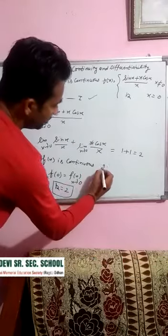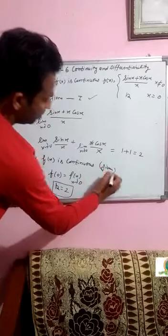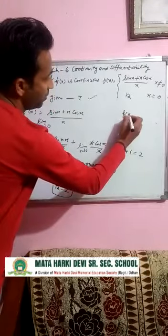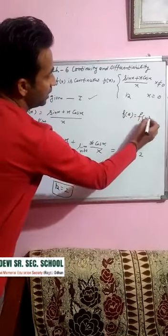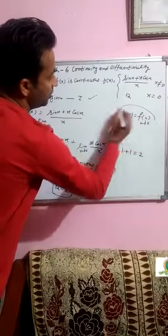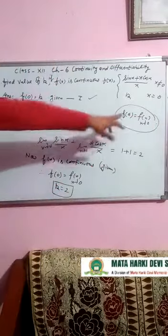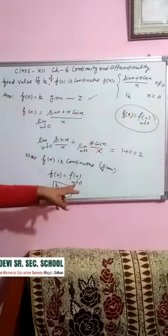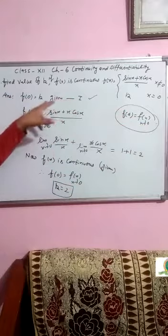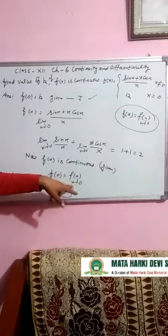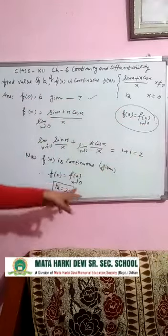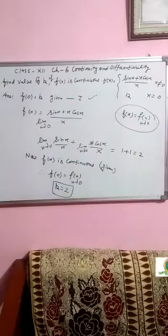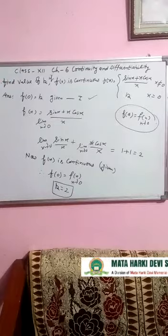Continuity given hai. Continuity ki condition: f(0) is equal to limit x tends to 0 of f(x). Toh f(0) kitna given hai? k is equal to limit x tends to 0 of f(x), jo ki 2 aata hai. Toh k ki value kitni aayegi? 2 aayegi.